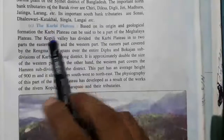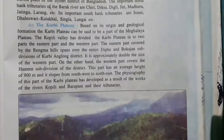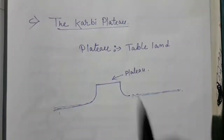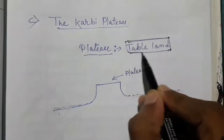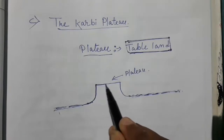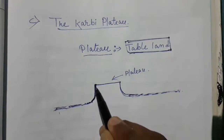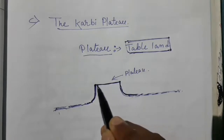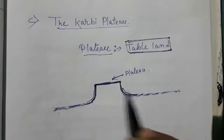The next physiographical division of Assam is the Karbi Plateau. Before studying it, let us revise what a plateau is. A plateau is a tableland — land that has some parts shaped like a table. That is, the land rises steeply on the sides but has a relatively flat surface on top. You will find plain areas on the top, and this is called a plateau.